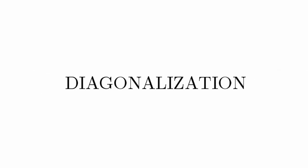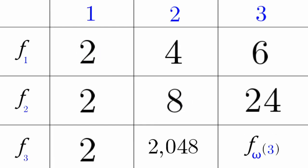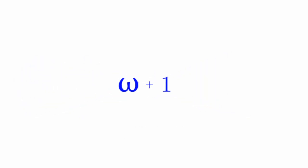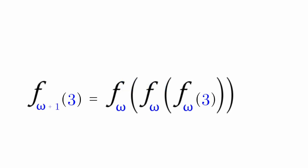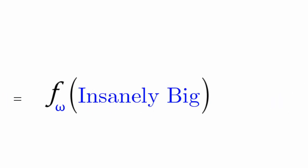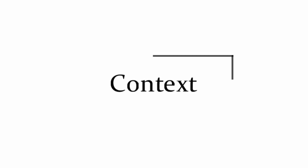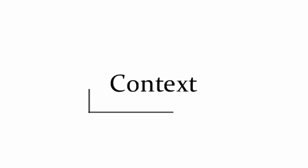In our previous video, we had diagonalization, where we picked numbers in a diagonal path using omega. Then we had omega plus 1, where inputting even a small number such as 3 yields such a massive number. In this video, I'm going to show you more information about omega, as they will be important later on.